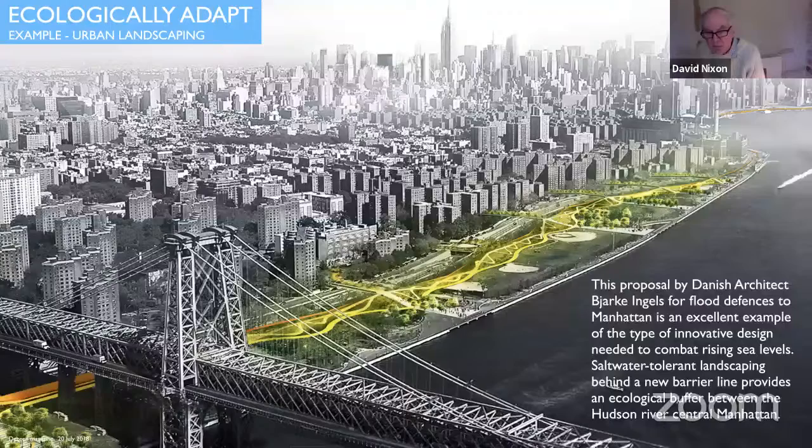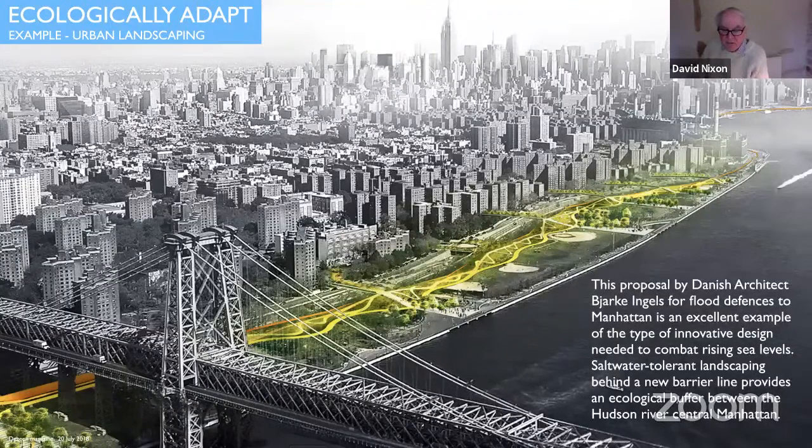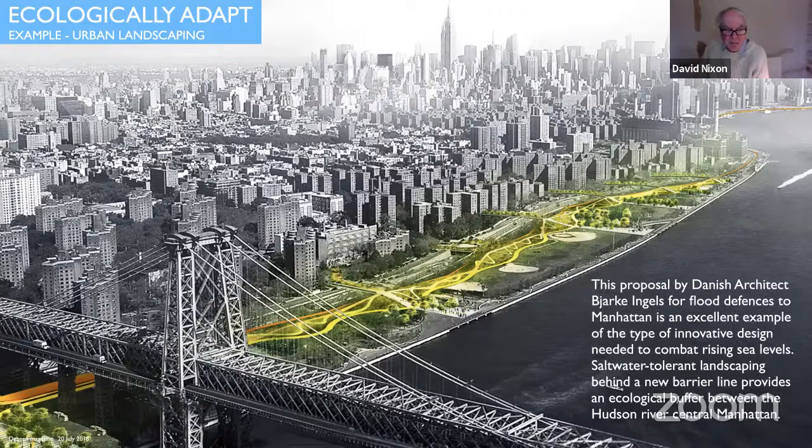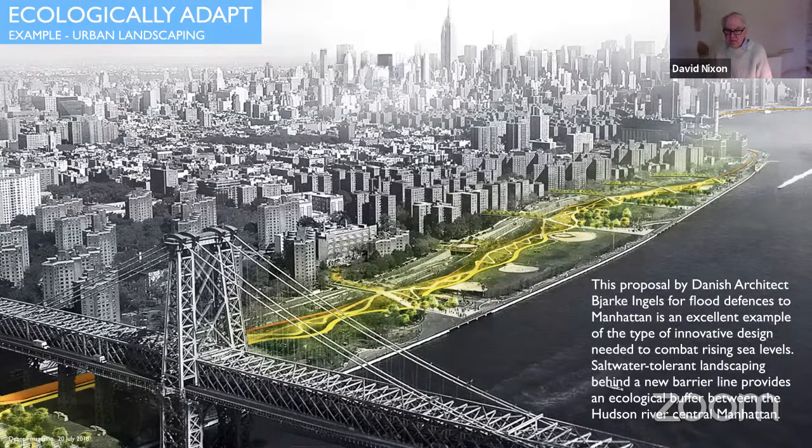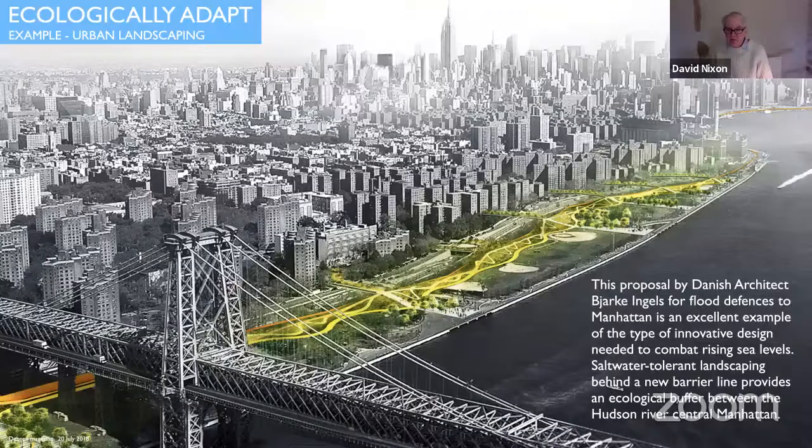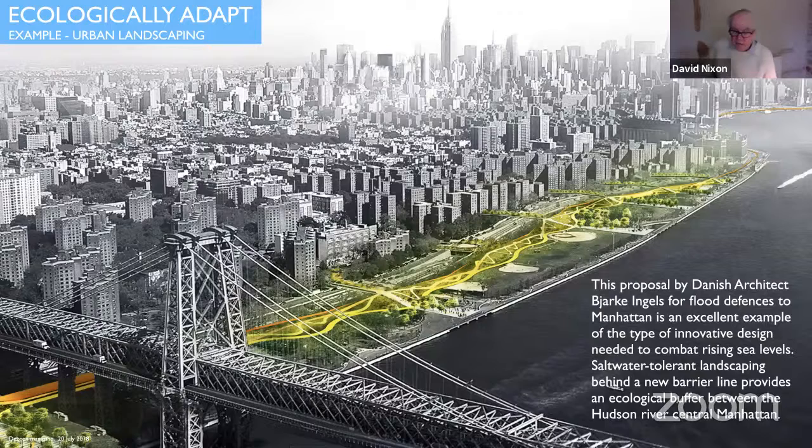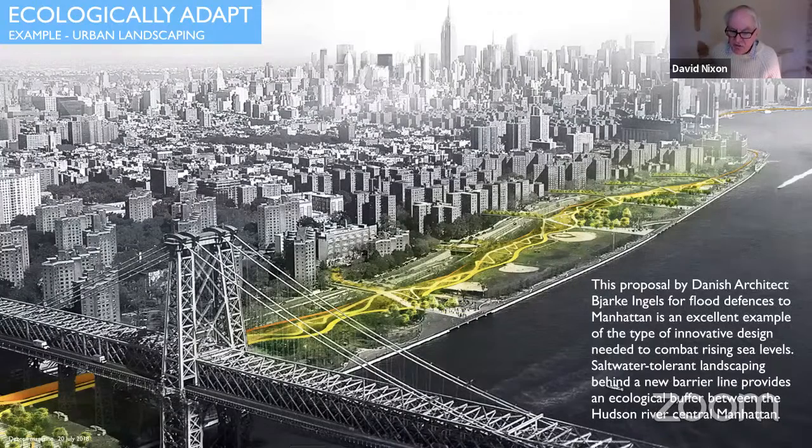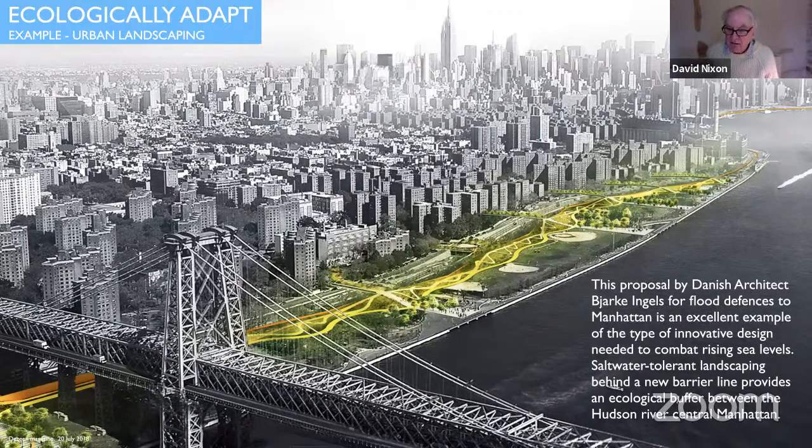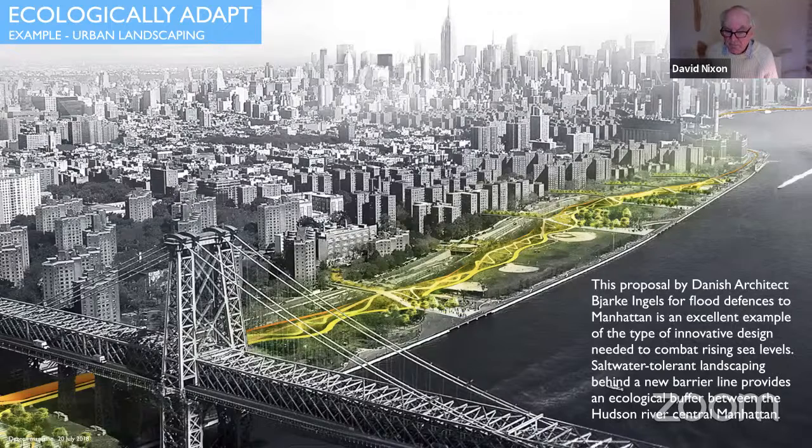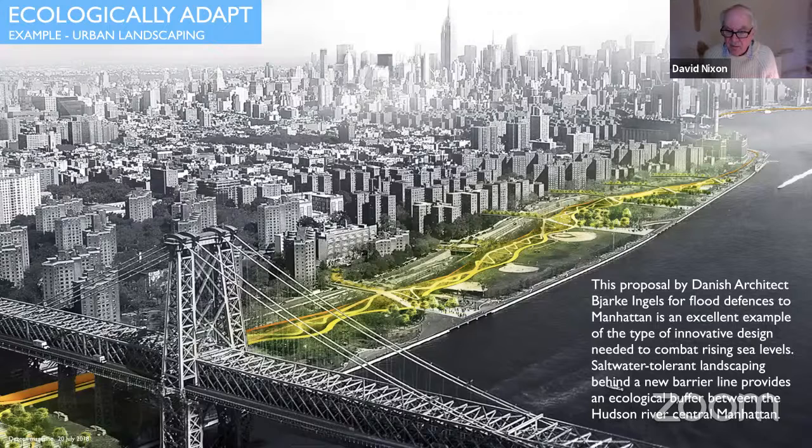The last example is this one. I was talking earlier about New York. This is a proposal for an ecologically based system to protect part of Manhattan by the Danish architect Bjork Ingels of the firm BIG, B-I-G, which I think is a terrific example of the kind of thing that can be done to combat rising sea levels, where he's basically proposing a major landscape park of saltwater-tolerant plants and vegetation behind a new barrier line to provide that ecological barrier, providing a barrier and also giving New York a major new leisure feature, landscape feature.